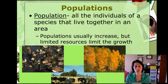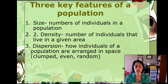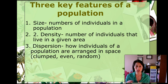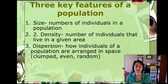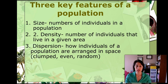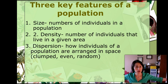We are looking at three key features of a population. When scientists go into an environment and look at the populations there — the different species, how they interact and grow — they're looking at three different things. They're looking at size, which is the number of individuals in a population. They're looking at density — within a given area, how many individuals are there versus within a large area. Density takes a section and counts the number of individuals within that area.